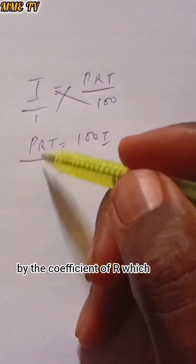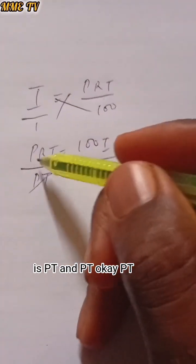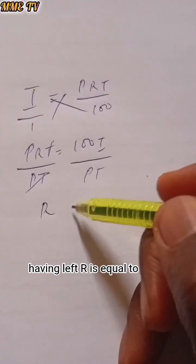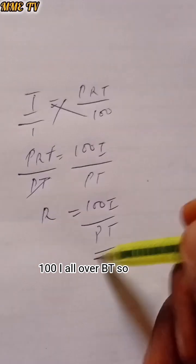You divide both sides by the coefficient of R, which is PT. PT will cancel PT, then you are left with R equals 100I over PT. So